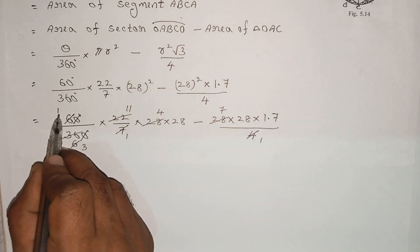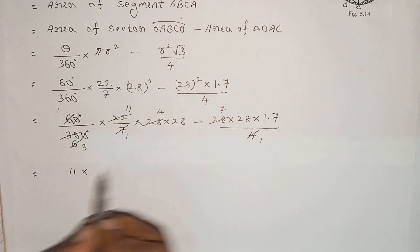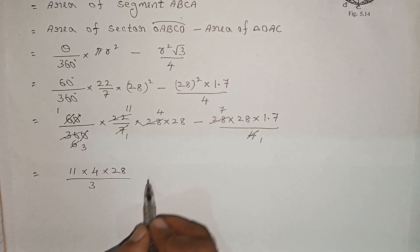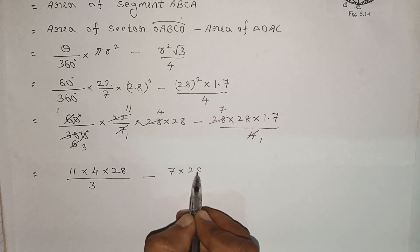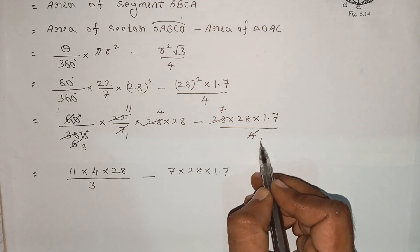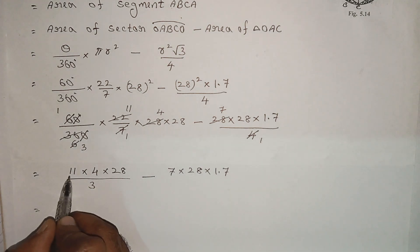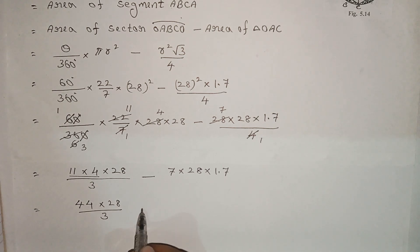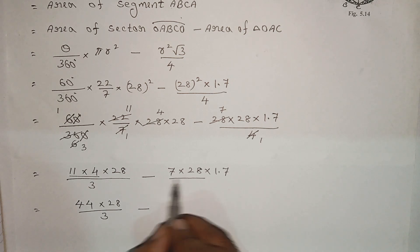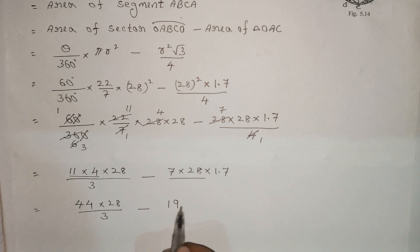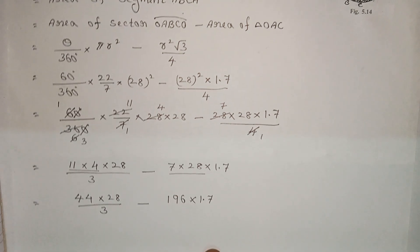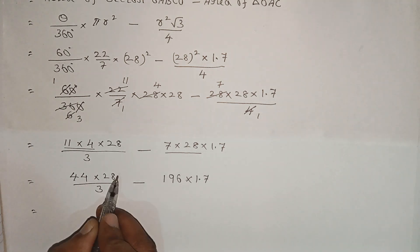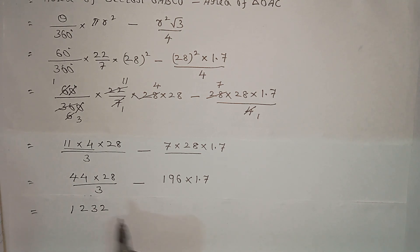Simplifying the numerator: (11/3) × 4 × 28 divided by 3, minus 7 × 28 × 1.7. This gives 44 × 28 divided by 3, minus 196 × 1.7, which equals 1232 divided by 3.